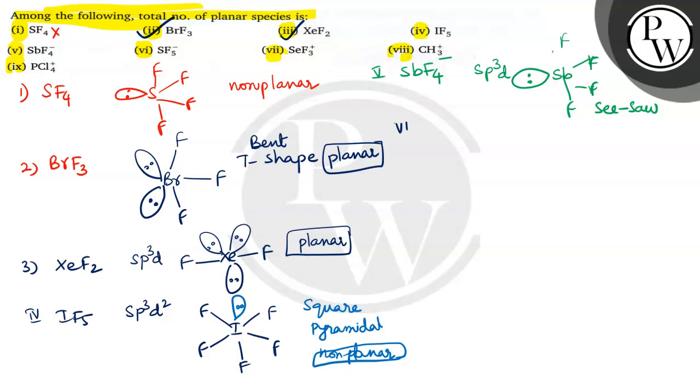SF4 for number 6. In number 6 what is given SF5 minus. It undergoes SP3D2 hybridization. At one position is occupied by the lone pair. This structure is non-planar and square pyramidal also non-planar.